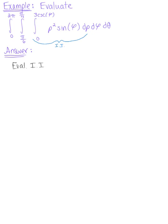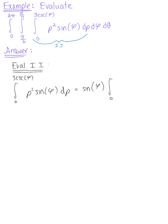We want to evaluate the inner integral, which is with respect to rho. We have the integral from 0 to cosecant of phi, of rho squared sine of phi, d-rho. Since sine of phi is held constant, we can pull it outside the integral: sine of phi times the integral from 0 to cosecant of phi of rho squared d-rho.